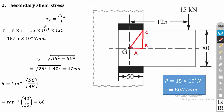Now for the secondary stress: the equation for finding tau 2 is T × R2 / J, where T is the torque, R2 is the radius, and J is the polar moment of inertia. First we calculate the torque T = P × e, that is load into perpendicular distance. The perpendicular distance e = 125 mm. Remember that e is the distance between the load acting point and the center of gravity of the weld region — that is very important. Here the distance is directly given, so T = 15×10³ × 125 = 187.5×10⁴ N·mm.